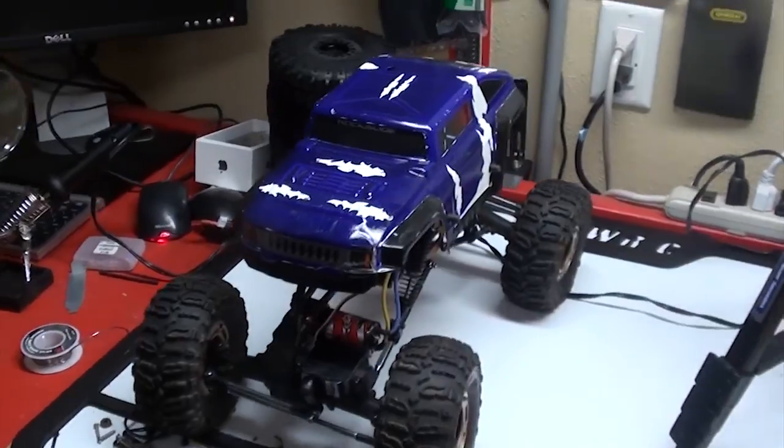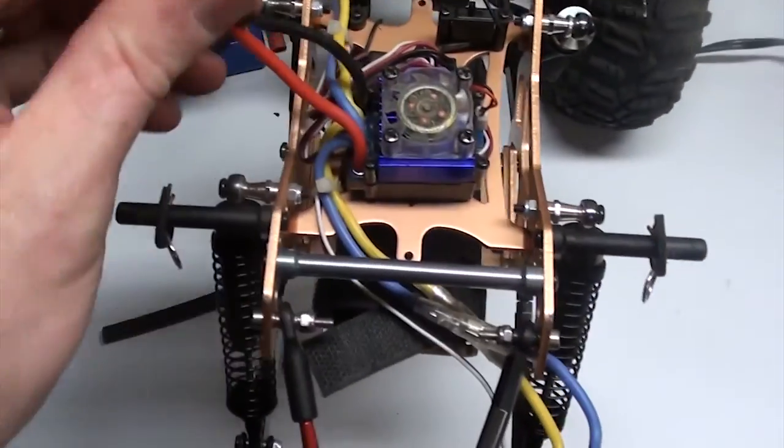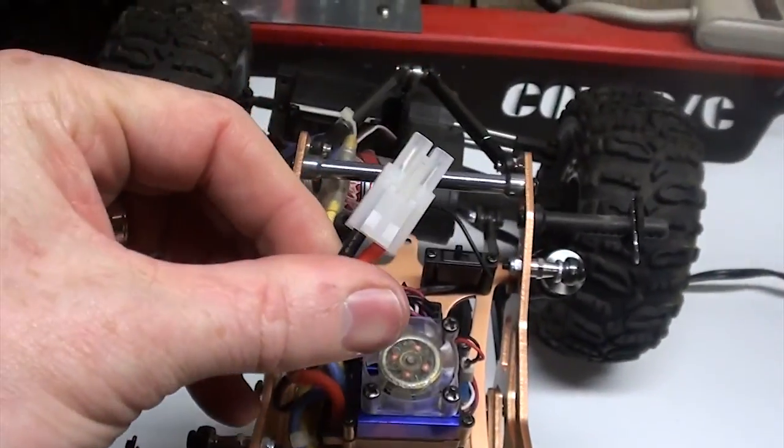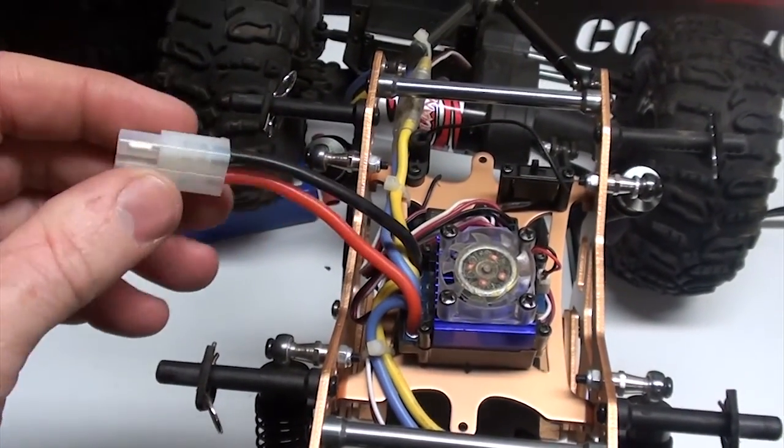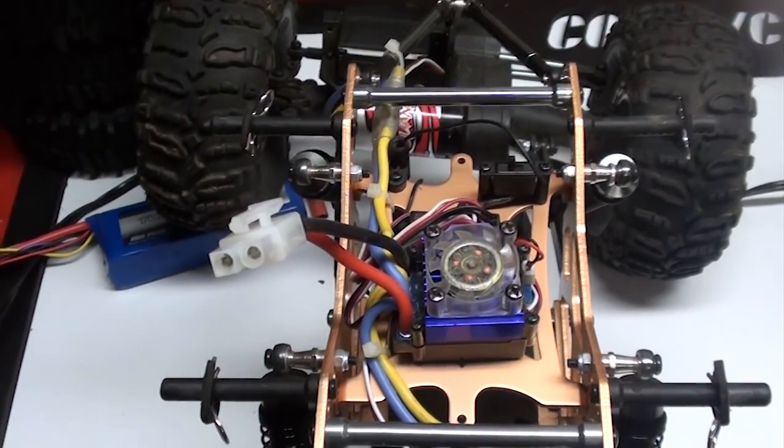So this is my RS-10. I'm going to go ahead and pop the body off, set it out of the way. As you can see here on the ESC, it's got a standard Tamiya plug on it. I'm going to take that off because I don't want to use that with my LiPos. All my LiPos are wired for Deans.